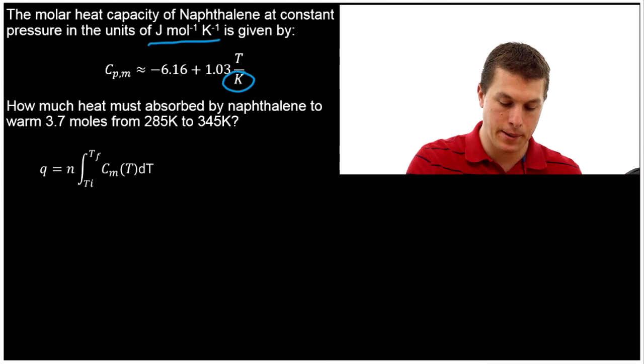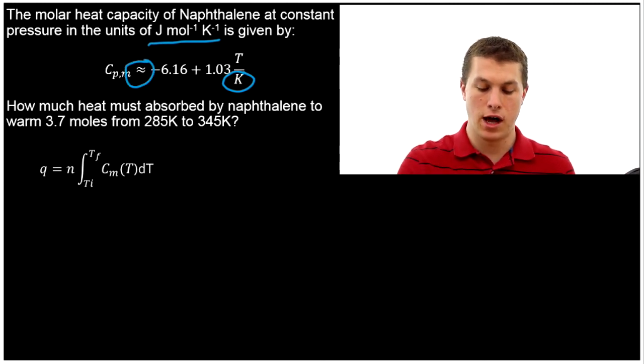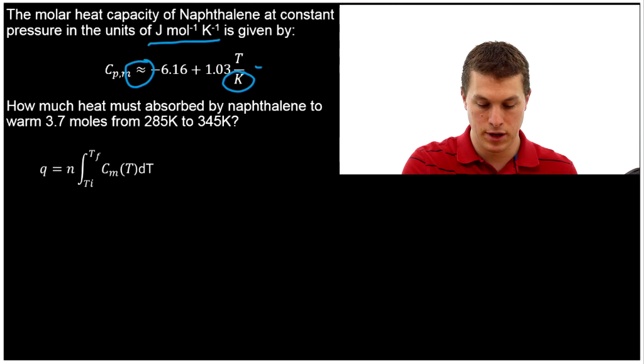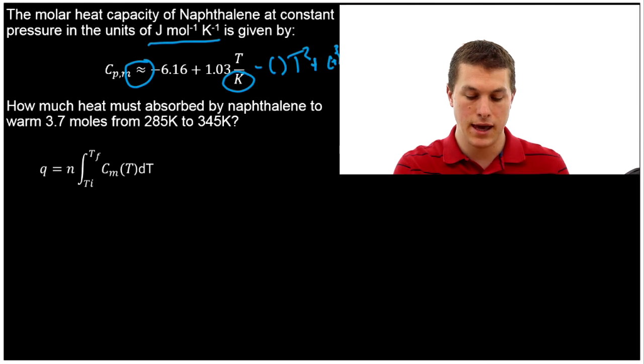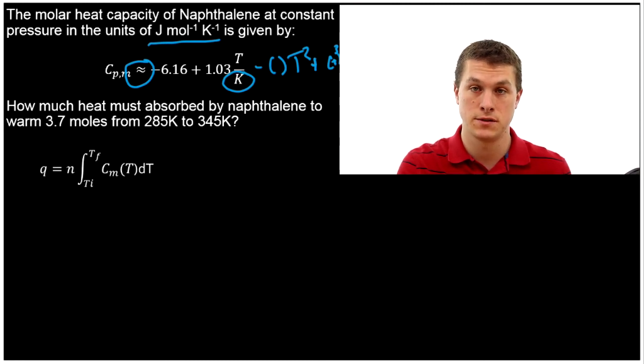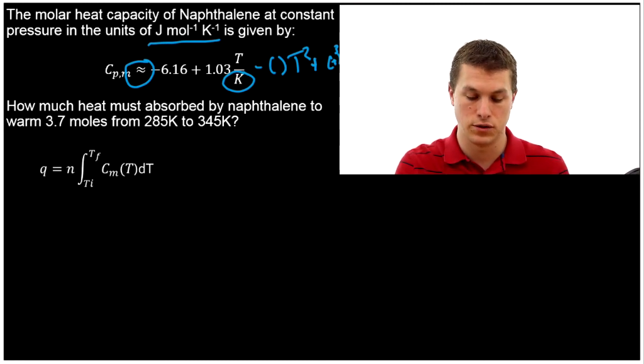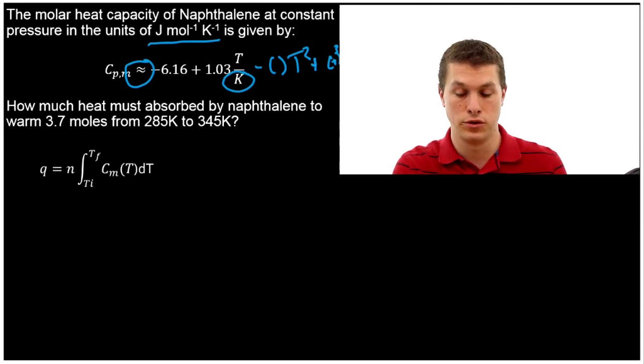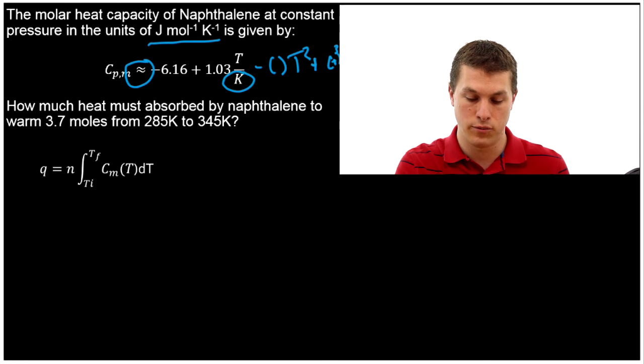Another thing you'll notice is this has an approximate equal sign here. There's other terms here that have dropped. So the next one will be like minus some number times T squared, and then plus some number times T cubed, and so forth. And we've truncated that. If you want to be more accurate, you need to include more terms. So the more terms you include, the more accurate it is. And if you look in the back of most thermodynamics textbooks, you'll see heat capacities listed for some substances and they'll have a whole series of constants you can do. We're just going to use the first two for computational simplicity, but there's no real difference when you do the math. It just takes a little longer if you have more terms.